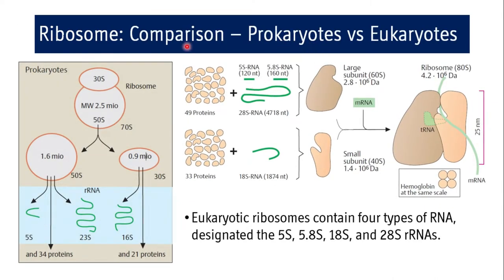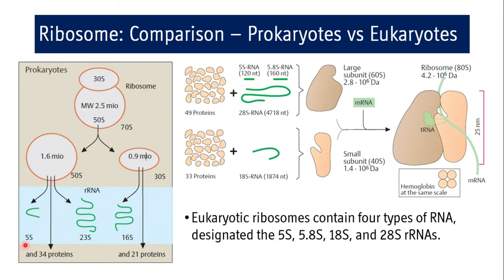Now, comparing prokaryotic and eukaryotic ribosomes: eukaryotic ribosomes have four rRNAs — 5S, 5.8S, 28S, and 18S — with two subunits: large 60S and small 40S. In contrast, the prokaryotic ribosome is a 70S ribosome comprised of two subunits: 50S and 30S. The 50S subunit contains 5S rRNA, 23S rRNA, and 34 proteins. The 30S subunit contains 16S rRNA and 21 proteins.